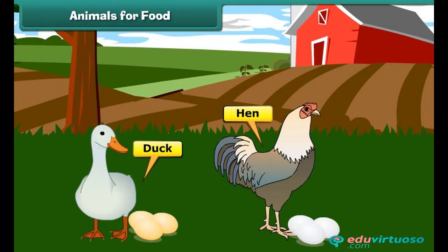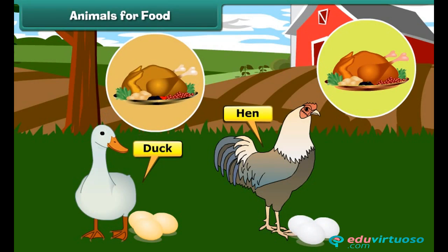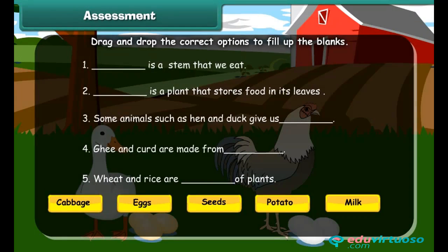Some animals such as hen and duck give us eggs. The flesh of some animals such as hen, duck, buffalo, goat, and fish is also used for food. Now it's time to have some fun — drag and drop the correct options to fill in the blanks.